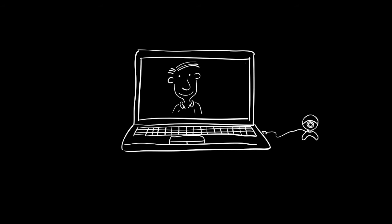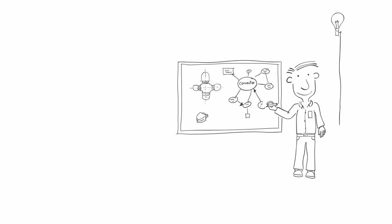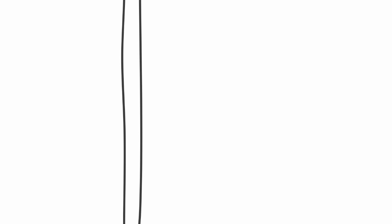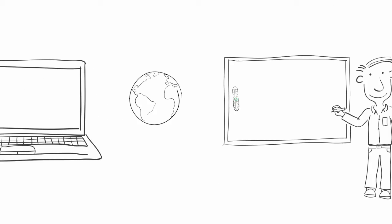But what happens when someone jumps up to draw a great idea on the whiteboard? You're left in the dark. Wouldn't it be great if you could actually see what they're writing in real time? Well, now you can. Get the whole picture with eBeam.